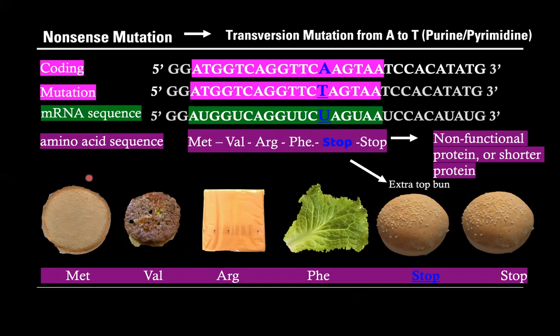Technically you could eat this if you took off the extra top bun and ate it without the tomato, or maybe you don't want to eat it like that, so then it would be non-functional because you can't eat it with two top buns. This would be a transversion mutation because the adenine mutates to a thymine, which is a purine to pyrimidine.